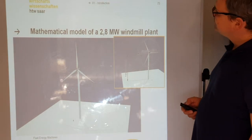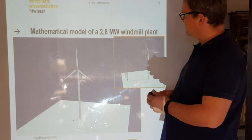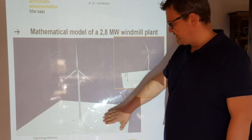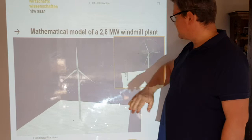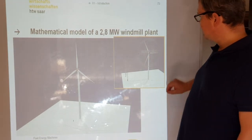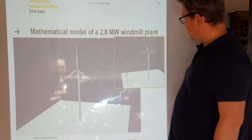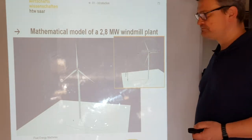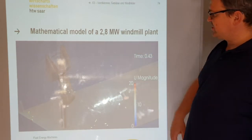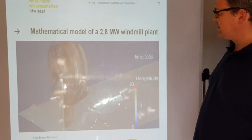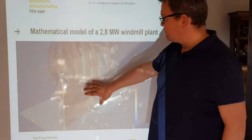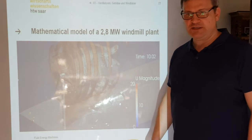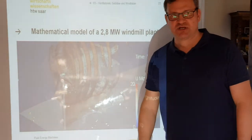For example, you can see here the mathematical model of a 2.8 megawatt windmill plant. With this model, we can define dimensions such as the diameter or the height of the rotor. Then we make a computational fluid dynamics simulation, visualize the swirls around the turbine, and decide on better geometries.